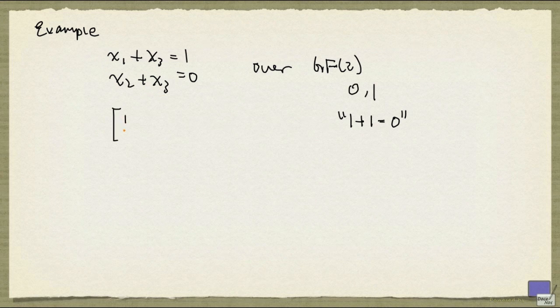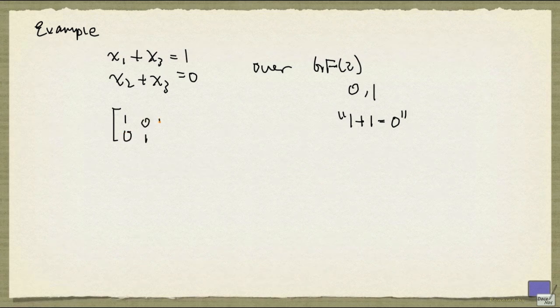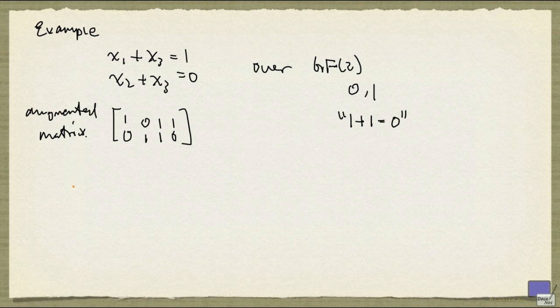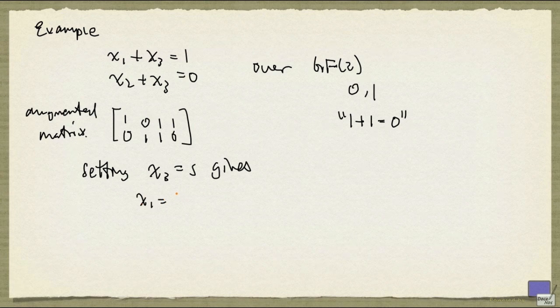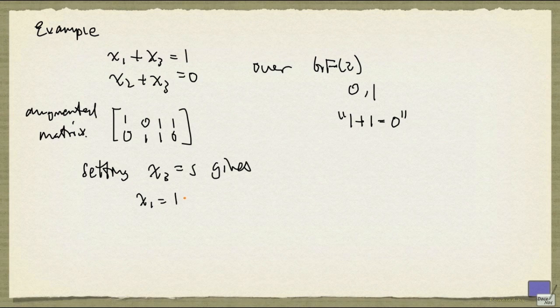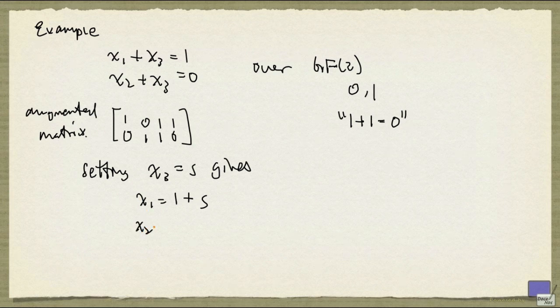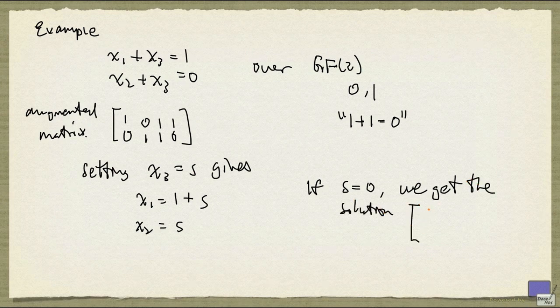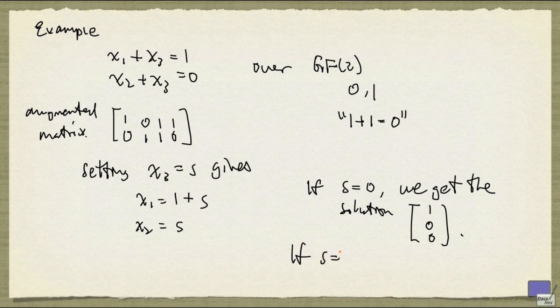because if you look at the augmented matrix, this is what you have. So that means we can set x3 to a parameter. And we'll set it to s. So that gives us x1 equal 1 minus x3, but we have no minus 1, so it becomes 1 plus x3. So 1 plus s. And x2 will be just s. And depending on the value of s, which can be only 1 or 0, that will give us two solutions. So if s is 0, we get the solution 1, 0, 0. And if s is 1, we get the solution 0, 1, 1.